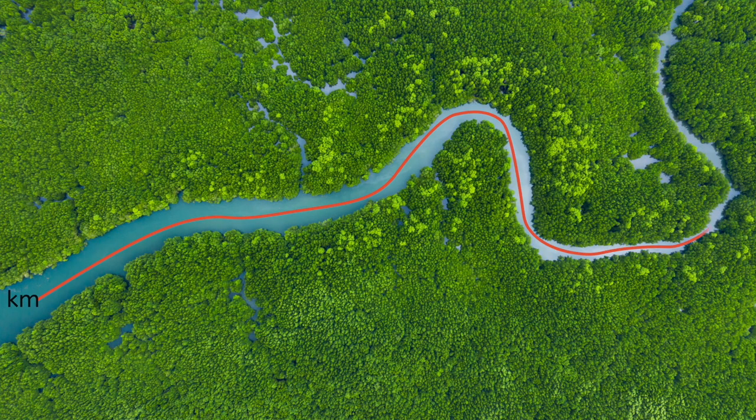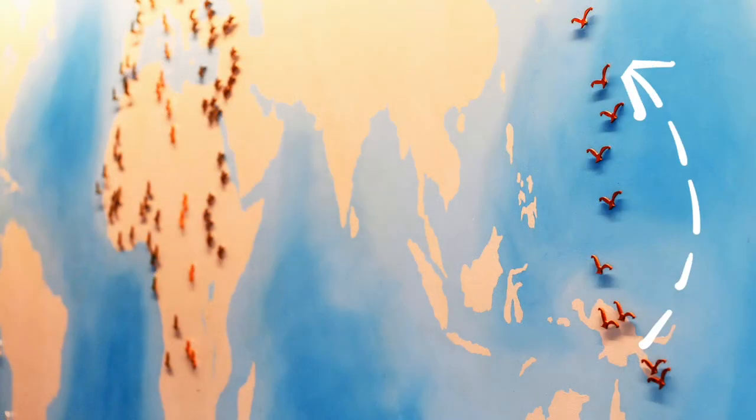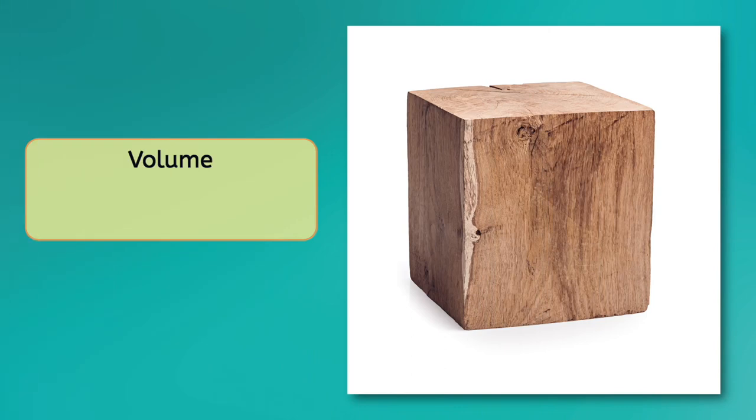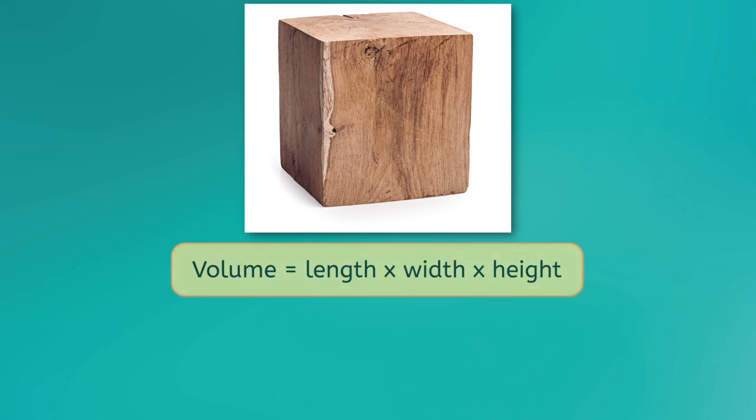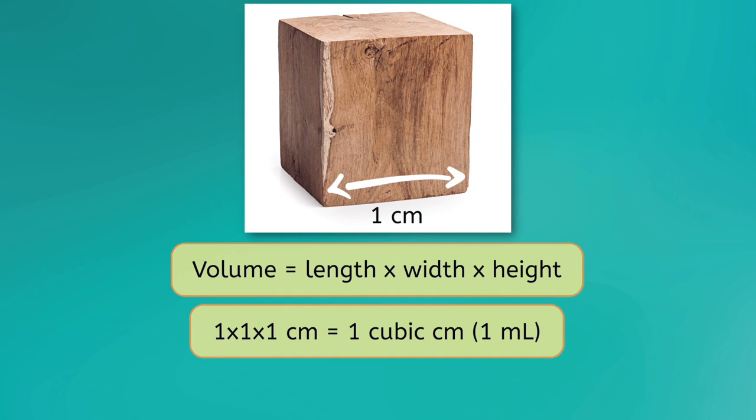Now we're ready to discuss volume. Volume is how much space something takes up. If your object has a simple shape like a cube, you can simply multiply the length by the width by the height to find the volume. A cube with a side length of one centimeter would have a volume of one by one by one centimeter, or one cubic centimeter. However, what if we want to measure the volume of a liquid?